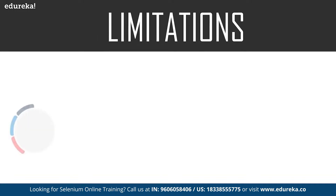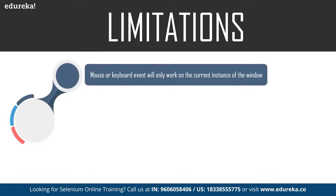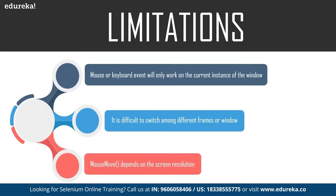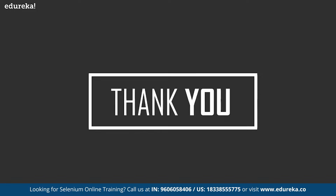Now let's take a look at the limitations of this robot class. The mouse or keyboard event will work only on the current window, and it is difficult to switch among different screens or windows. For example, if a robot event is executing but the code execution moves to another window, the mouse or keyboard event will still remain on the previous window. Methods like mouseMove depend on screen resolution, so tests using XY coordinates will behave differently on different screens. Also, if you're running tests in a virtual machine, the script failure rate is higher.